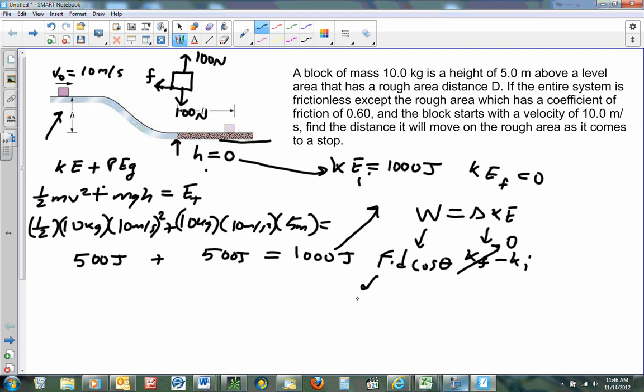So this force actually is a frictional force times distance d. And then times cosine of 180, because it's moving to the right but friction is to the left, equals negative Ki. Since to the right is positive, this frictional force is going to be negative. So how do I find the frictional force? It's μ times the normal force, which is going to be 0.6 times 100 newtons. And that's going to be 60 newtons.